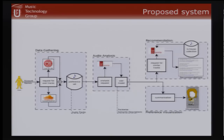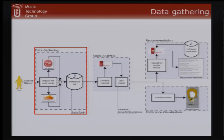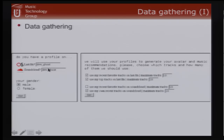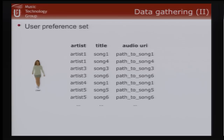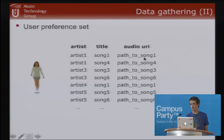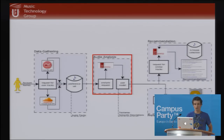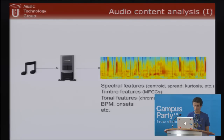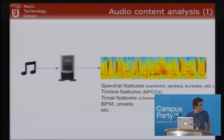Going into detail for each sub-block, starting with data gathering: we use your Last.fm or SoundCloud account name, you decide whether to use favorite or top tracks and choose the number — 10, 20, etc. From these services we get a list of tracks: artist, title, and a path to the audio file. We need the actual audio file to proceed. From this user preference set we perform audio analysis using an in-house library to extract low-level audio features and descriptors.